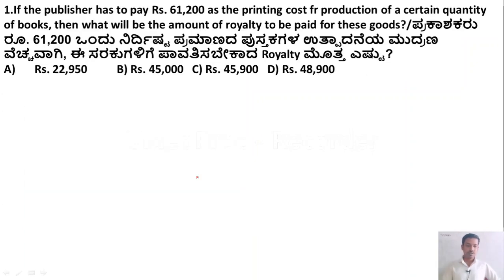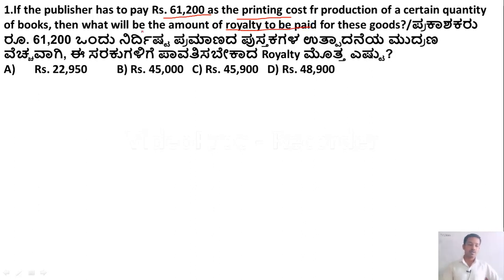The first question is: if the publisher has to pay Rs. 61,200 as the printing cost for the production of a certain quantity of books, then what will be the amount of royalty to be paid for these books? The options are Rs. 60,800 and others.